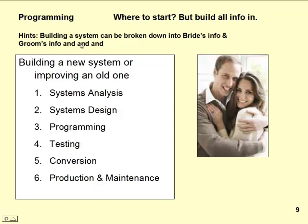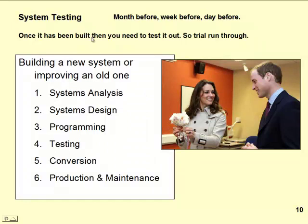You've got to build all the information in. Building a system can be broken down into the bride's information, the groom's information, and so on — that's programming. Now, once you've built your program, you've got to test it: a month before, a week before, the day before. Once it's been built, you need to test it out and run a trial run through. That's in the fourth step — testing.